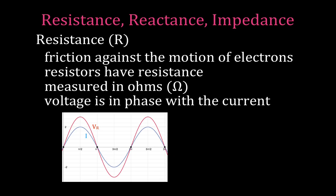So that leads to this diagram where we have our curve for the voltage and our curve for the current. This is the voltage across the resistor, and you can see the voltage drops to the resistor and the current are in phase. The peaks and the troughs occur at the same time in the cycle, and that leads to this phasor diagram where we have the current and the voltage across the resistor in phase. There's no phase angle between them, and we typically draw them both along the positive x-axis.